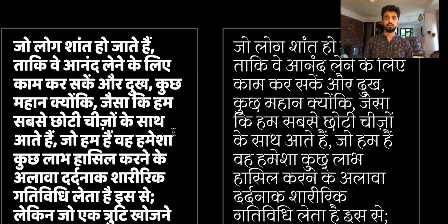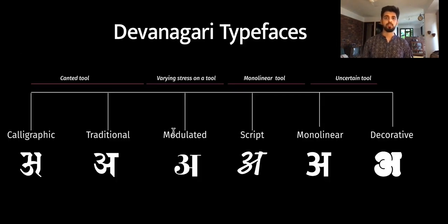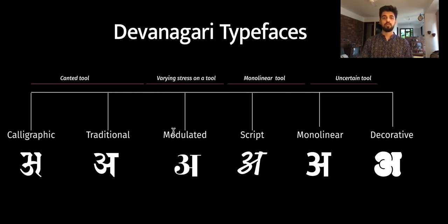I analyzed around 300 different Devanagari typefaces from various foundries ranging over the past 30 years. A lot of these typefaces were only available as type specimens as the fonts were protected by proprietary software. I then segregated these fonts into different groups on the basis of how closely they looked to one another. This is what I ended up with — seven different types of Devanagari typefaces.